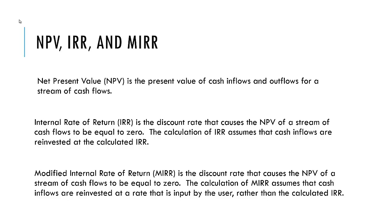NPV, or the Net Present Value, is the present value of cash inflows and outflows for a stream of cash flows. Typically, the discount rate we would use to calculate NPV would be the weighted average cost of capital for a firm.